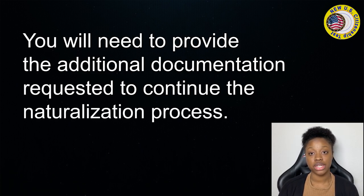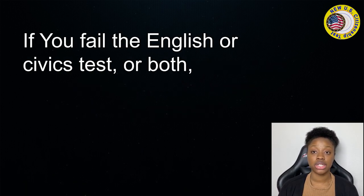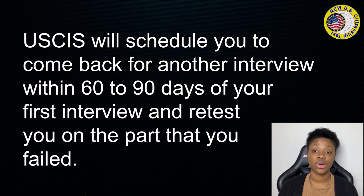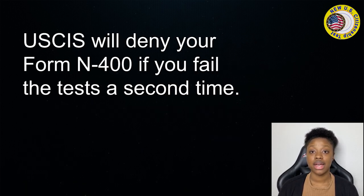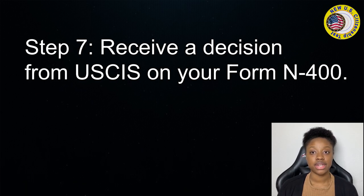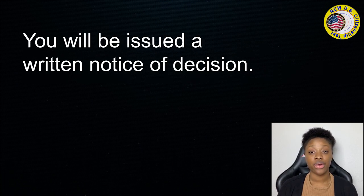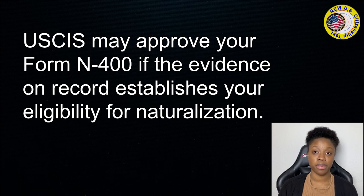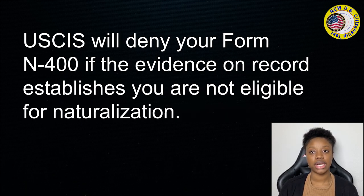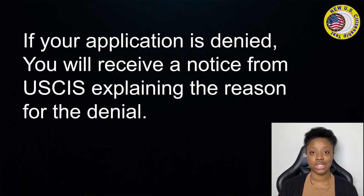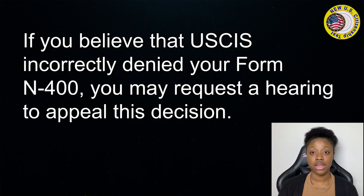You will need to provide the additional documentation requested to continue the naturalization process. If you fail the English or Civics tests, or both, USCIS will schedule you to come back for another interview within 60 to 90 days of your first interview and retest you on the part that you failed. USCIS will deny your Form N-400 if you fail the test a second time. USCIS may approve your Form N-400 if the evidence on record establishes your eligibility for naturalization, and will deny it if the evidence establishes you are not eligible. If your application is denied, you will receive a notice explaining the reason. If you believe USCIS incorrectly denied your Form N-400, you may request a hearing to appeal this decision.